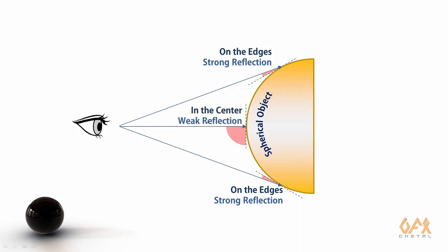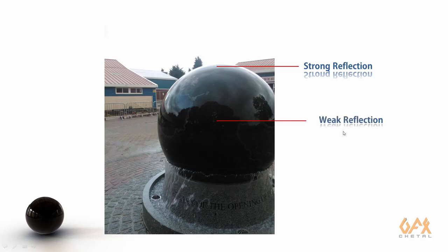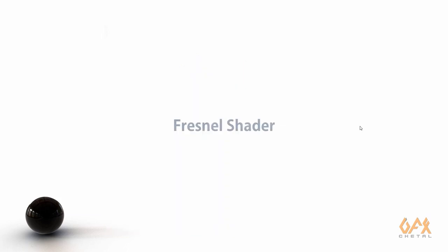On the edges you get strong reflection, and in the center you get weaker reflection. Likewise in this example that I rendered through Maya Arnold — on the edges you get strong reflection and in the center you get weaker reflection.